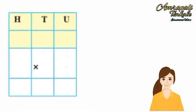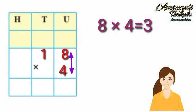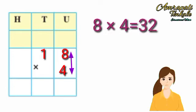Multiply 18 multiply by 4. First multiply 8 units by 4. 4 eights are 32.